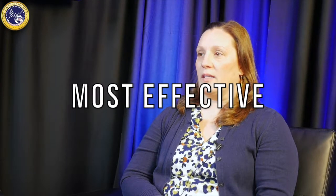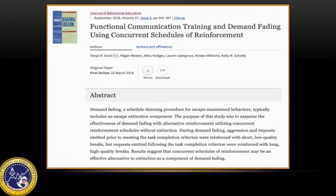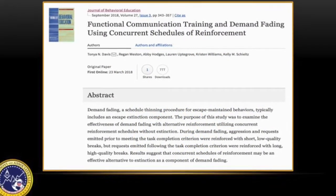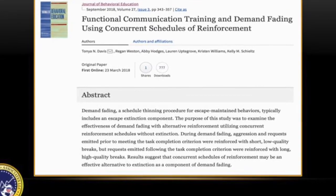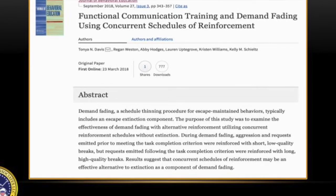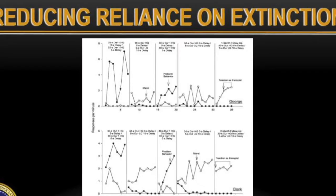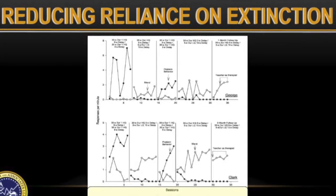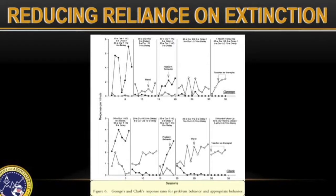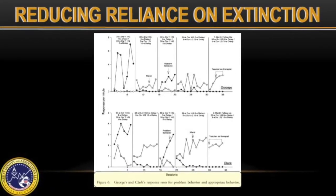Results indicated that while manipulations of individual dimensions were effective at shifting allocation to appropriate responses, combinations of multiple dimensions were most effective. In a recent example, Davis and colleagues applied these findings to the treatment of escape-maintained problem behavior exhibited by a 7-year-old diagnosed with ADHD, ODD, and Disruptive Mood Dysregulated Disorder. By providing differentially higher quality of reinforcement for an FCR than problem behavior, problem behavior was successfully reduced to zero levels and task completion increased.